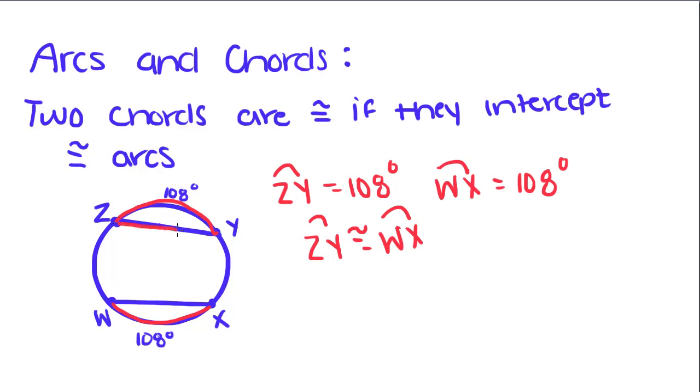That means that chord ZY has to be congruent to chord WX. So if ZY equals 10, that means WX also has to equal 10.